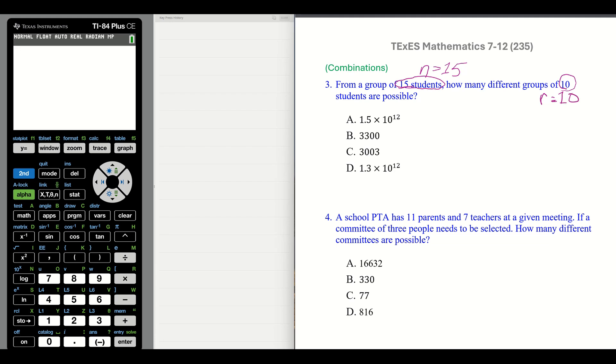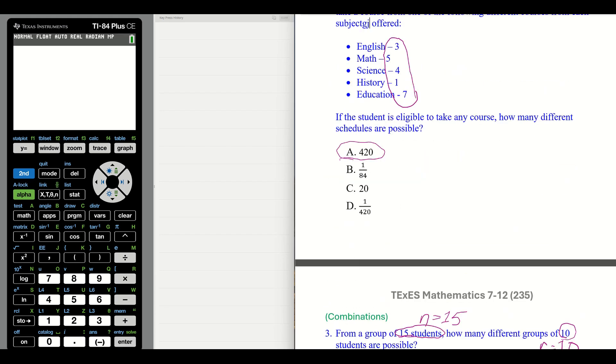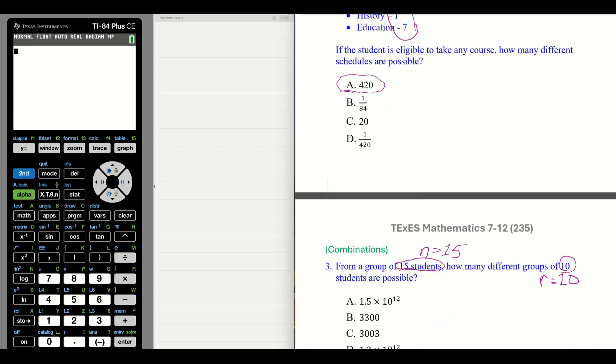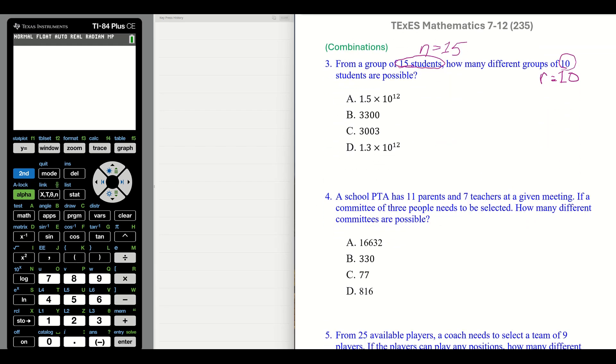And the number of students in our combination we care about, that is going to be our R equals 10. So we're not talking about a permutation, because order does not matter. We're talking about a combination. And we are not talking about probability.